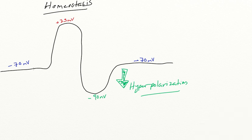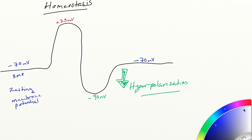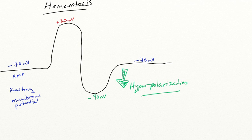When the cell is at negative 70 millivolts, this is considered the resting membrane potential. At plus 33 millivolts, this is where all the action happens. This is your action potential or your depolarization. Depolarization is on the way up and it's where your action potential occurs.